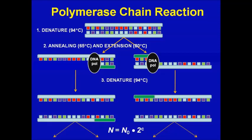The PCR schematic starts with denaturing double-stranded DNA into two single strands. Engineered primers — shown in green — bind to a specific region of nucleic acid of interest and facilitate binding of Taq polymerase, which then copies the template strand. This effectively doubles the number of nucleic acids. Starting with one piece of double-stranded DNA, you get two after one cycle. The mathematical relationship is N = N₀ × 2^C, where C is the number of cycles.